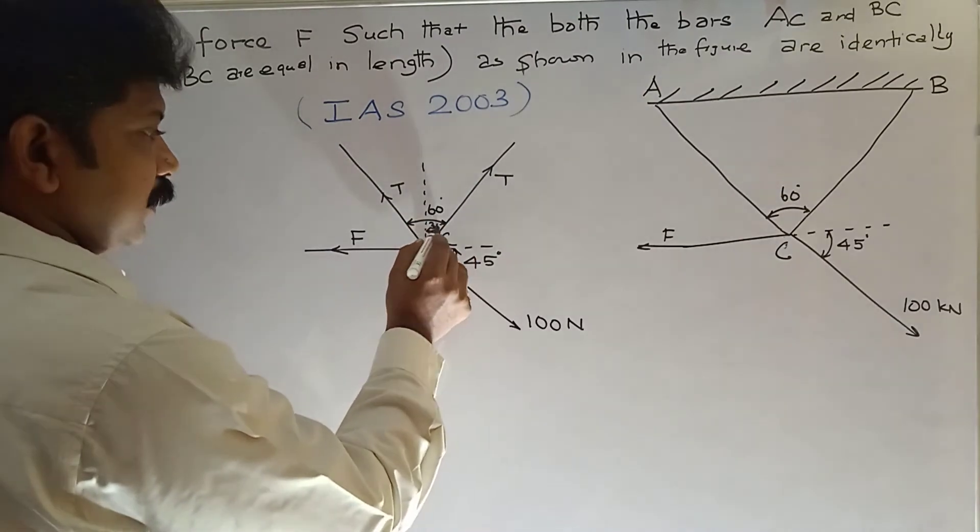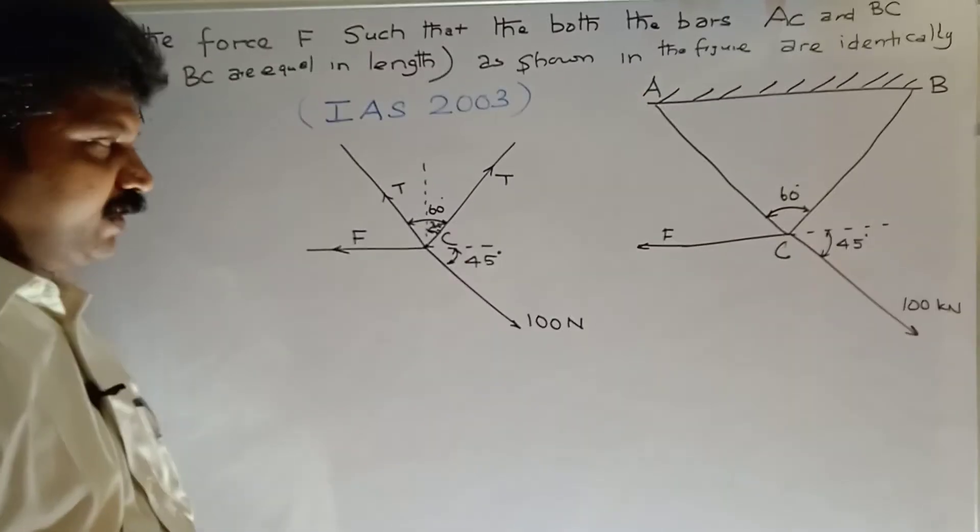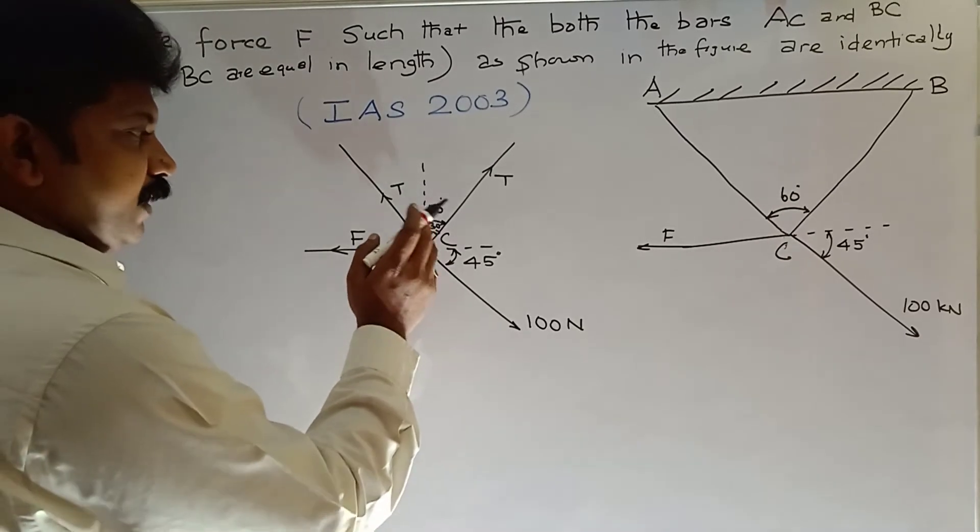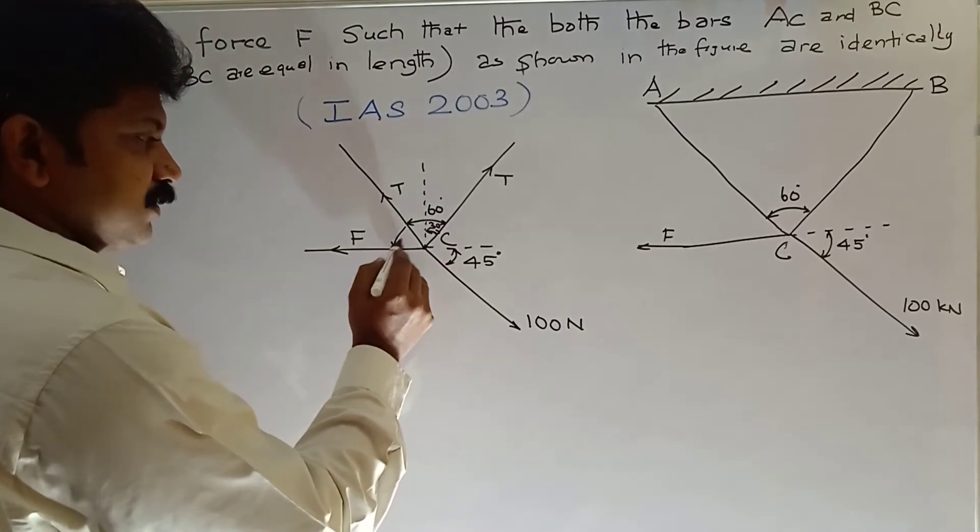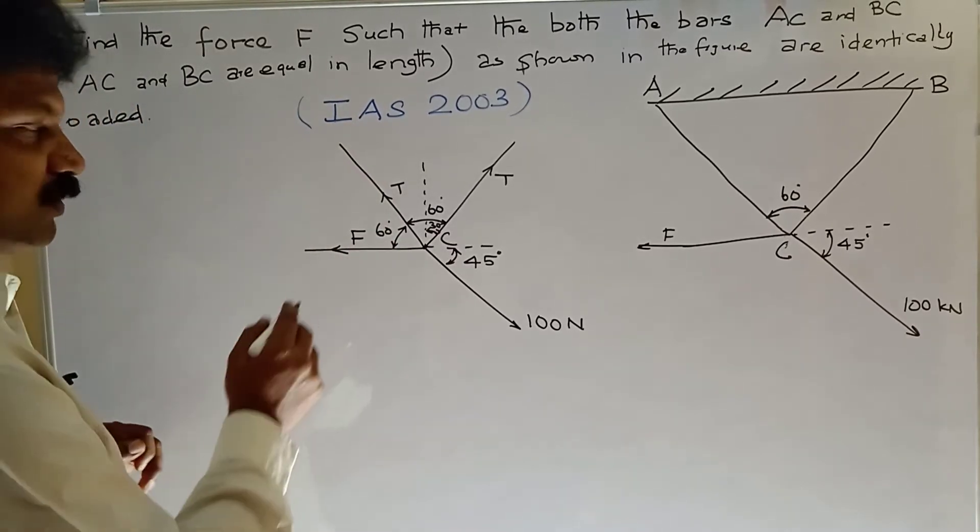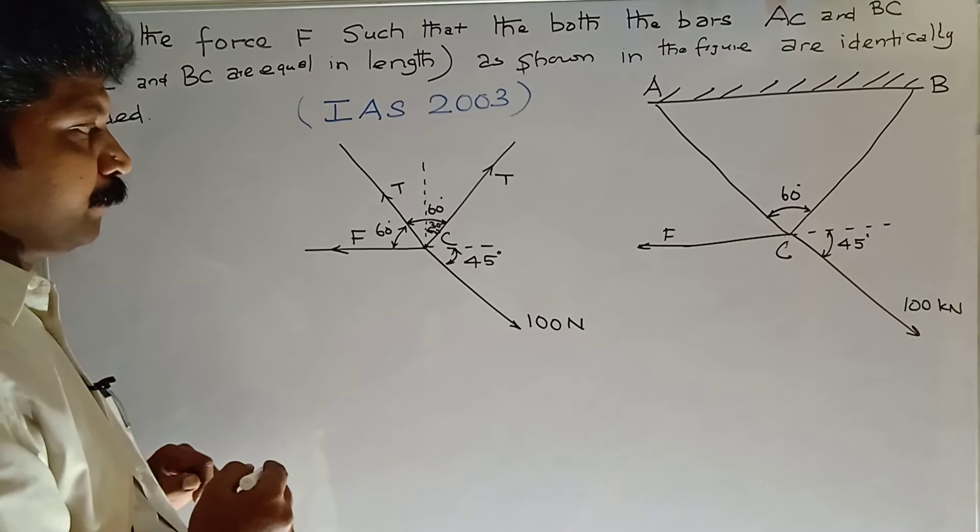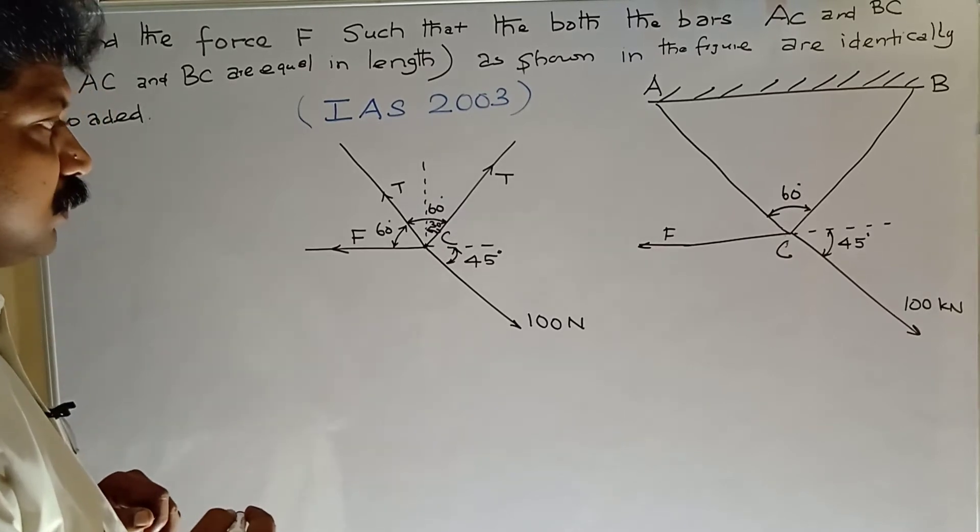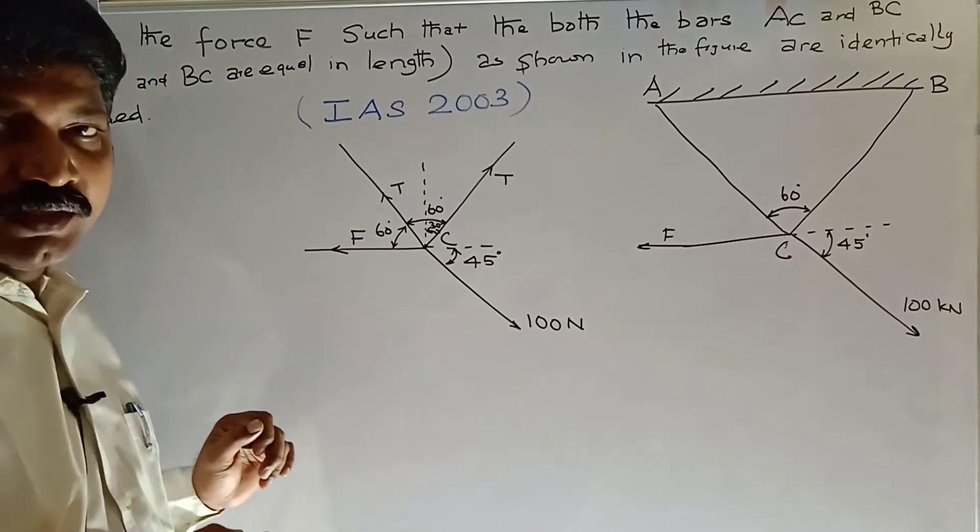30 degrees, and then this 30 degrees, the remaining 60 degrees in this case. So you see, angle of the force F with horizontal is 60 degrees. Now apply the equilibrium condition.